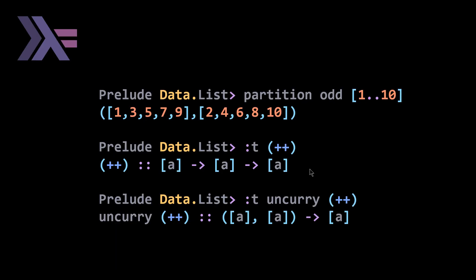So basically, if we take a look at this, if we go partition odd 1 to 10, we get our pair or two tuple back. And what we want to be able to do is to concatenate these two lists together. And if we look at the signature of concatenation, which is just the ++ put inside parentheses, we get something, a type signature that takes a list of a's, takes another list of a's, and then returns you a list of a's. And that's just basically going to concatenate them together.